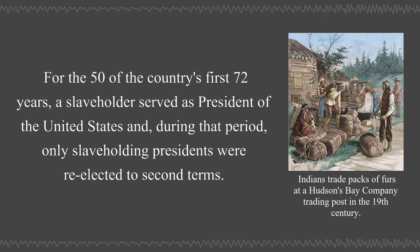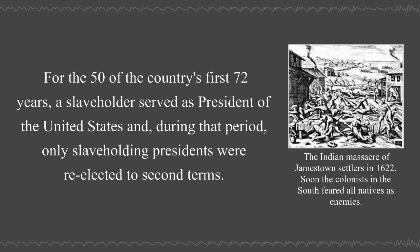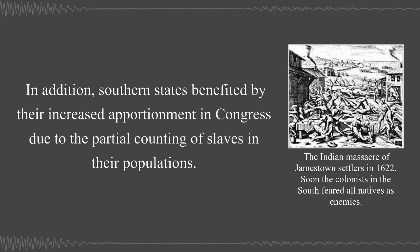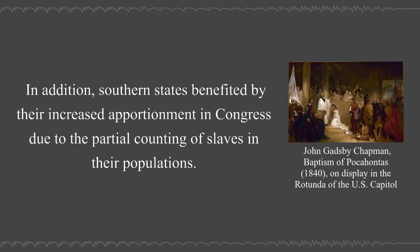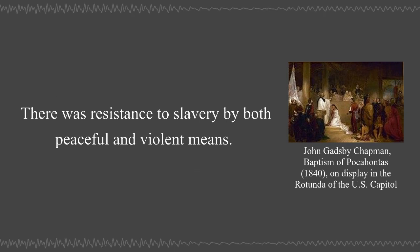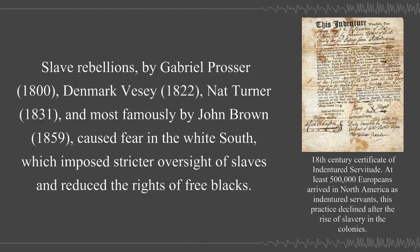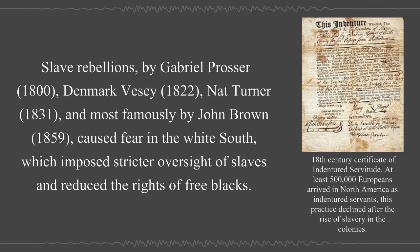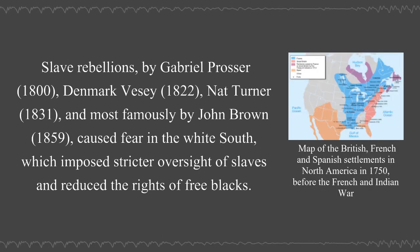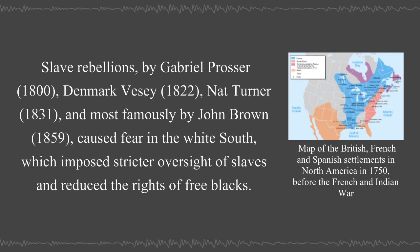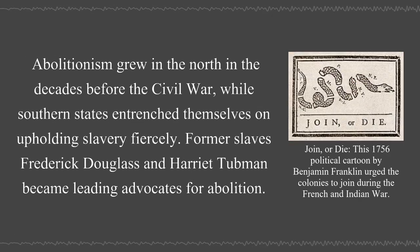For 50 of the country's first 72 years, a slaveholder served as president of the United States, and during that period, only slaveholding presidents were re-elected to second terms. Southern states also benefited from their increased apportionment in Congress due to the partial counting of slaves in their populations. There was resistance to slavery by both peaceful and violent means. Slave rebellions by Gabriel Prosser (1800), Denmark Vesey (1822), Nat Turner (1831), and most famously by John Brown (1859) caused fear in the white South, which imposed stricter oversight of slaves and reduced the rights of free blacks. Abolitionism grew in the North in the decades before the Civil War while Southern states entrenched themselves on upholding slavery fiercely. Former slaves Frederick Douglass and Harriet Tubman became leading advocates for abolition. However, before 1860, only a minority of Northern whites supported abolition, which was often seen as a radical measure.